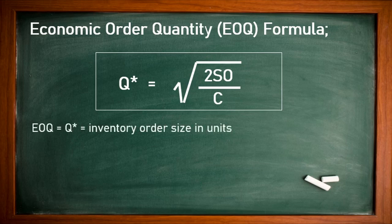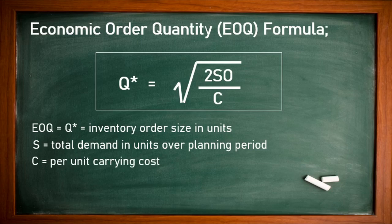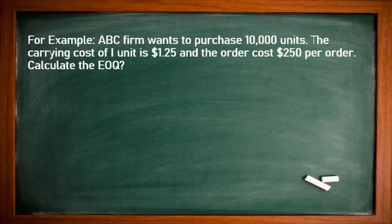The EOQ formula is: Q = square root of (2SO / C), where Q is the economic order quantity — the inventory order size in units that minimizes cost. S is the total demand in units over the planning period (typically one year). O is the ordering cost per order. C is the per-unit carrying cost — what is spent to carry or transport each unit to the company.